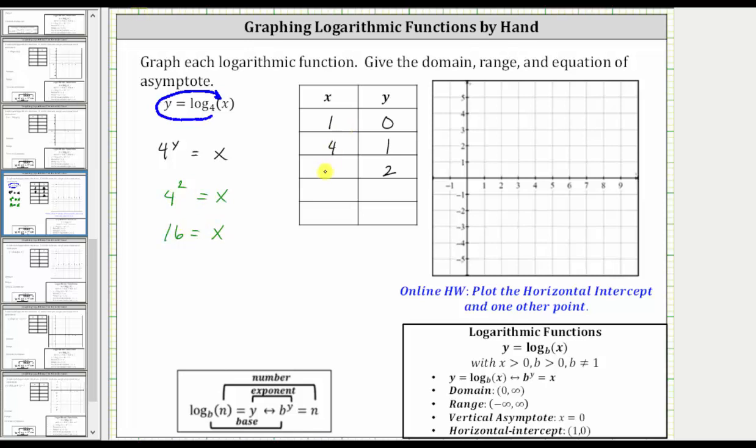So while this does give us a point on the graph, notice how 16 comma two is not on the given coordinate plane, so it's not going to help us make a graph. So let's go back and select a y value between zero and one, as well as between one and two.